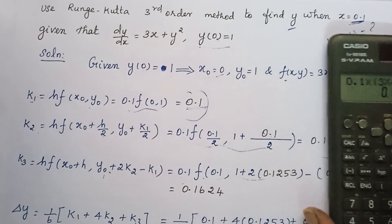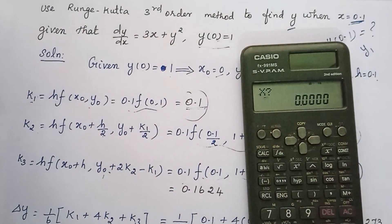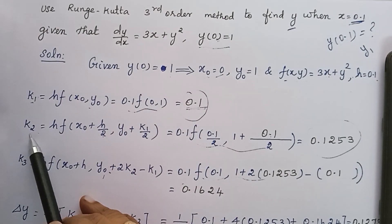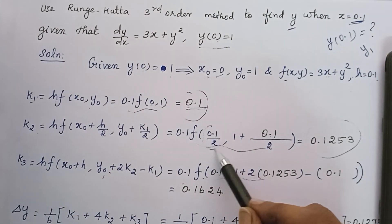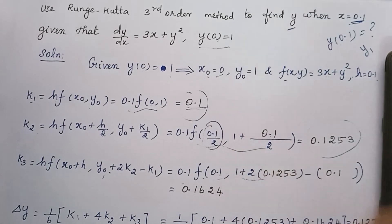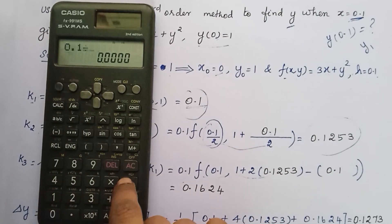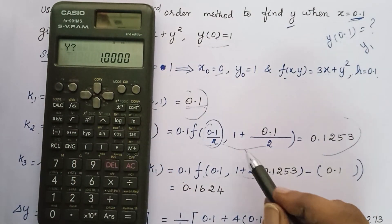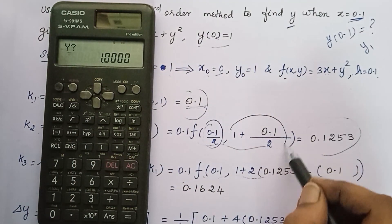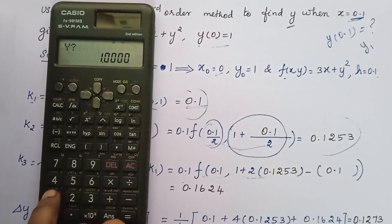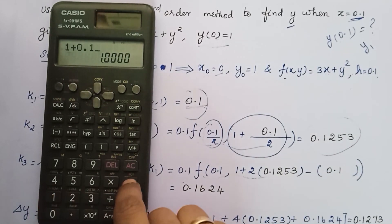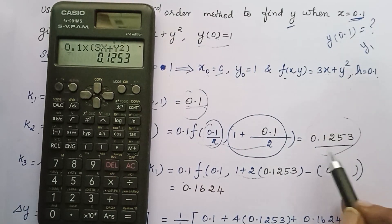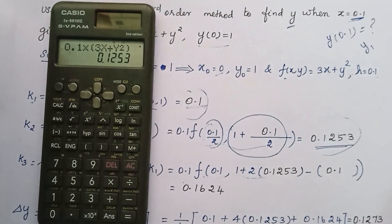This is the K2 value calculation. Again, press clc. Enter x value 0.1. In the K2 formula, in the place of x, there is 0.1 divided by 2. Then we enter y squared. This gives the K2 value.